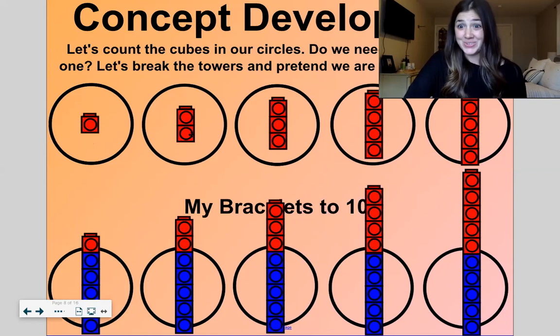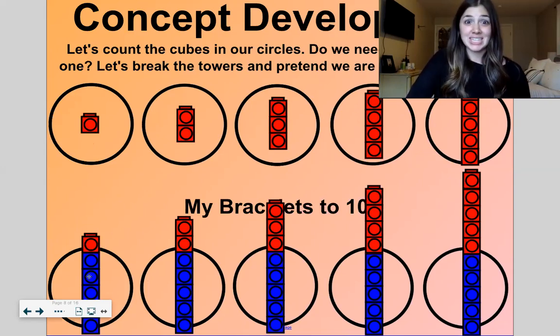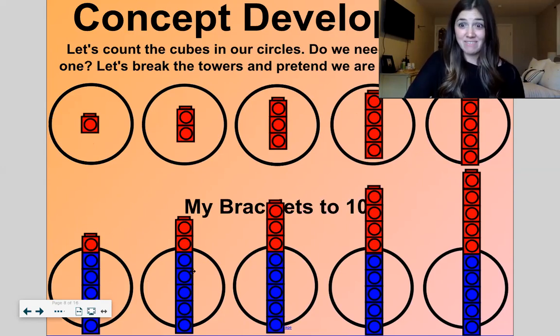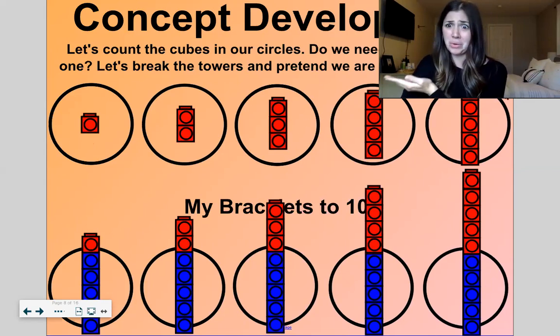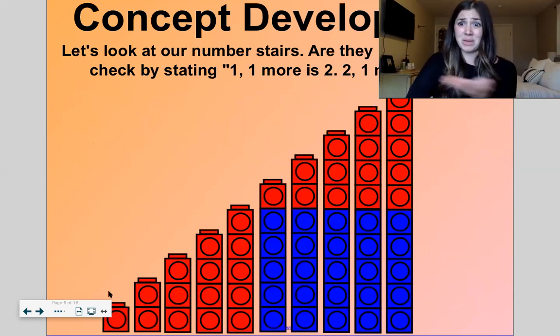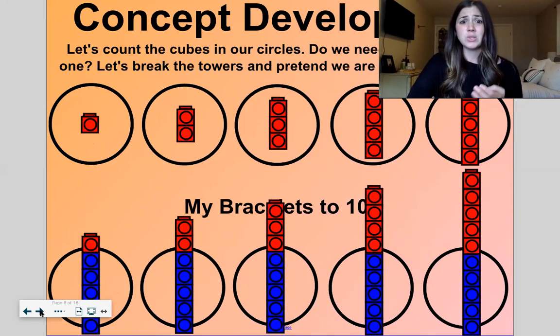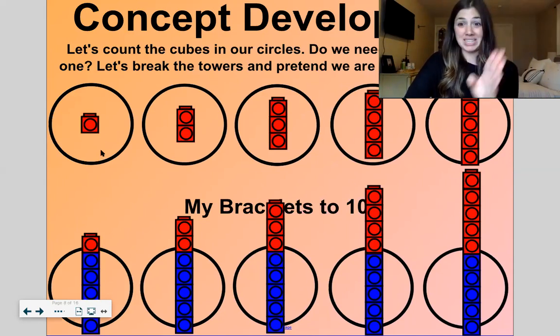Remember we just took apart this tower and put them inside a circle. They're kind of coming out of the circle because they're tall. They're taller than the circle. So let's count the cubes in our circles now the one more way. One. One more is two. Two. One more is three. Three. One more is four. Four. One more is five. Five. One more is six. Six. One more is seven. Seven. One more is eight. Eight. One more is nine. Nine. One more is ten. We don't have to count every single cube because we know that we took apart this and we already counted this and we were sure this was right. We just broke apart the towers and we made bracelets.